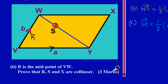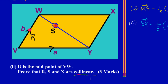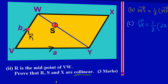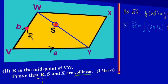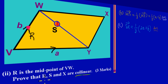They're asking us to prove that R, S, and X are collinear, and that's an easy three marks. Collinear simply means points that lie on a straight line. So what they are saying is we should prove that R, S, and X lie on a straight line.